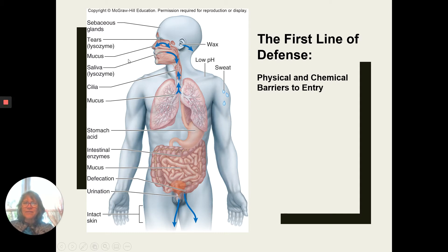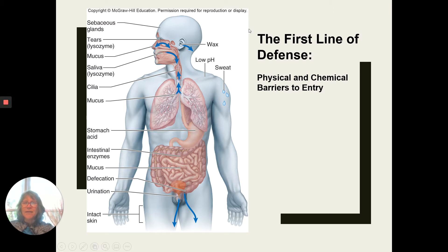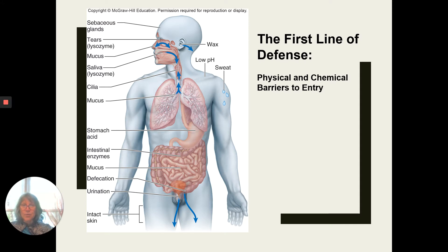Our first line of defense includes physical and chemical barriers: sweat glands, the pH of our sweat, tears containing lysozyme — an enzyme that breaks down bacterial cells and viral envelopes — mucus that traps pathogens, perspiration, ear wax, saliva, stomach acid, enzymes in the intestine, and the mechanical flushing of urine. All of these remove different pathogens that try to get in through portals of entry.